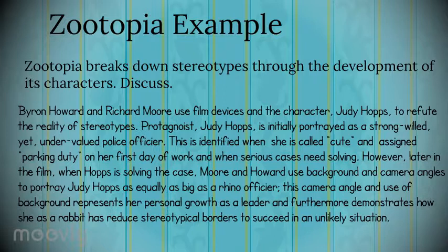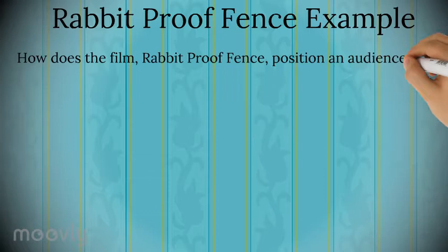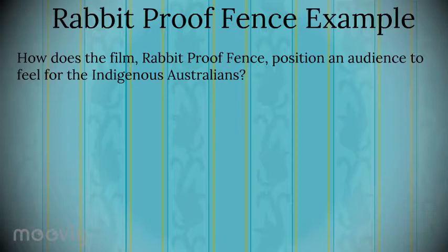The second example we'll be going through is an example from The Rabbit Proof Fence. In this, I'm going to use the example of the low camera angle looking at Mr. Neville and the white costumes of the girls, and I might see if I can include how the girls are often perceived using a high camera angle. The essay question I'll be answering is: how does the film Rabbit Proof Fence position an audience to feel for the Indigenous Australians?